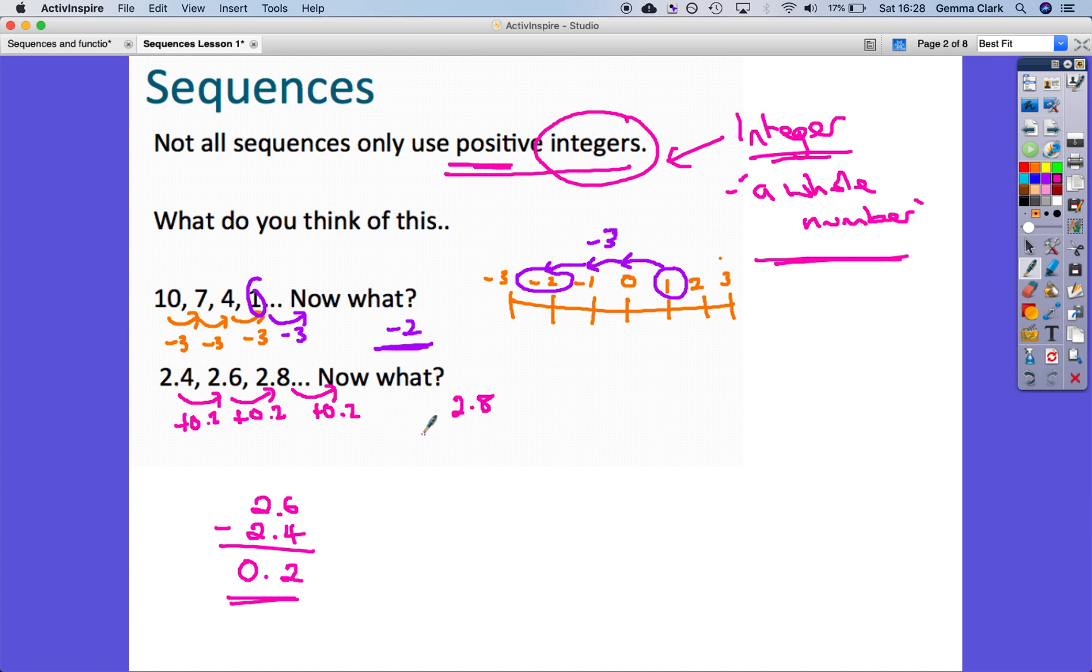So what would we get if we were adding on another 0.2 to 2.8? Let's have a look. 2.8 add 0.2, 8 plus 2 is 10, you have to carry the one, decimal place in, 2 plus 0 is 2 add 1 is 3, so the next term would have to be 3, or if you like to keep the pattern, well these are all to one decimal place, 3.0 if you like, you could just have 3, that's fine.